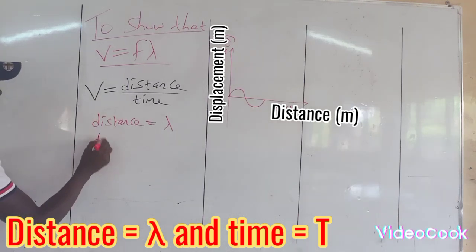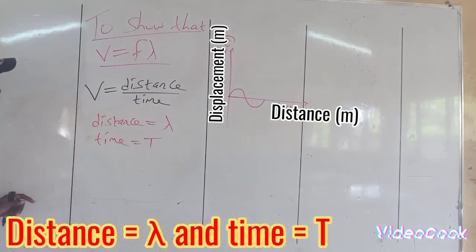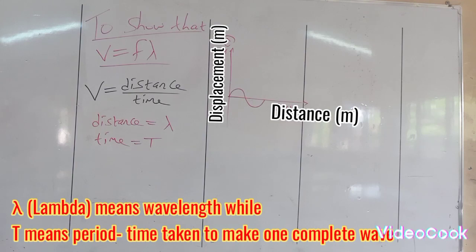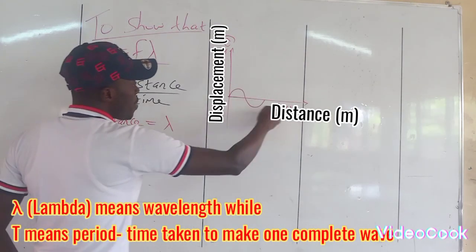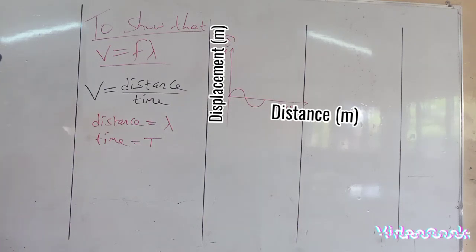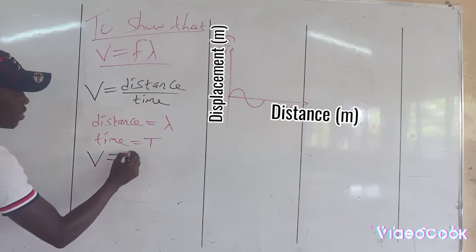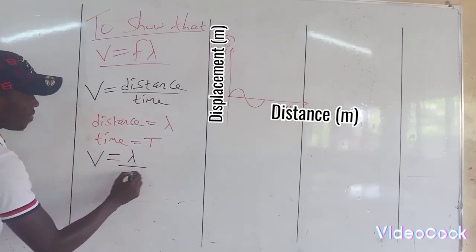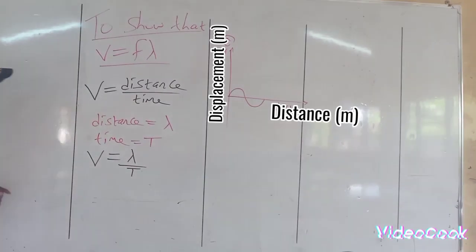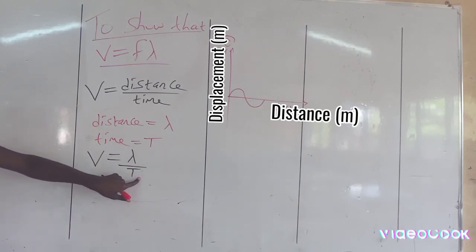And the time taken is known as the periodic time — that is the time taken to cover one wavelength. So in that case it is right to say velocity is given by wavelength divided by period — in other words, distance covered by one wave divided by time taken to cover one wave.